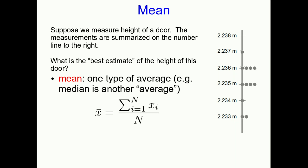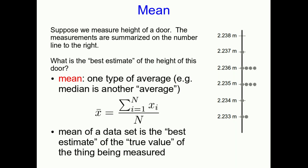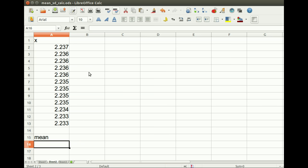And what we normally choose is the mean which you've probably met in earlier schooling. It's one type of average, the median is another average but the one we want here is the mean and you've probably learned to calculate it. We always take the mean of a data set as the best estimate of the true value. There may not actually be a true value of the height of the door because for example one side may be a different height from the other, but we still want to have one number that we think is the most representative value of the measurements of height of the door.